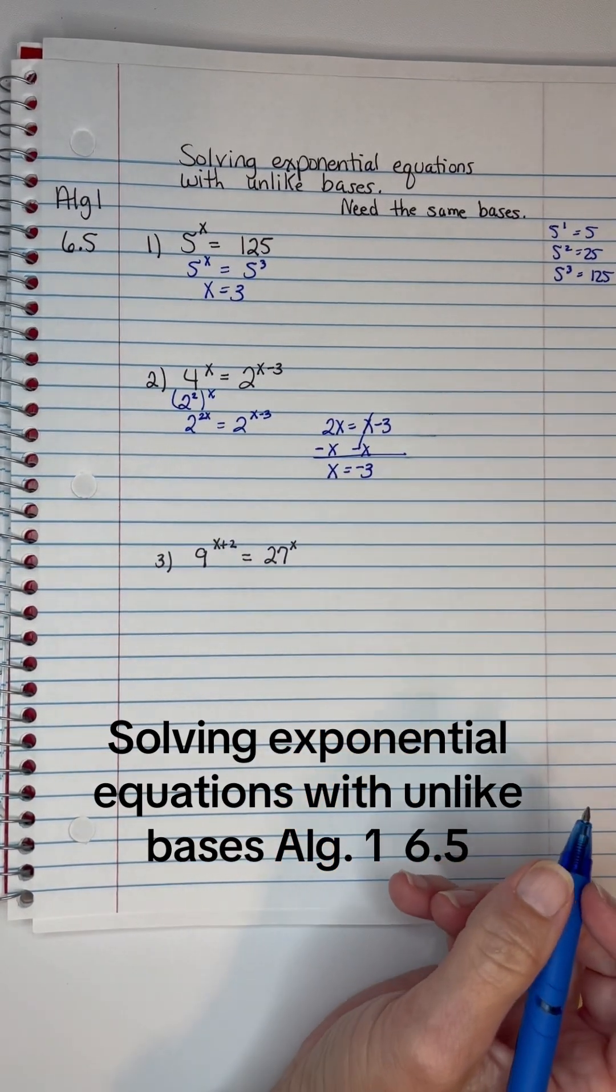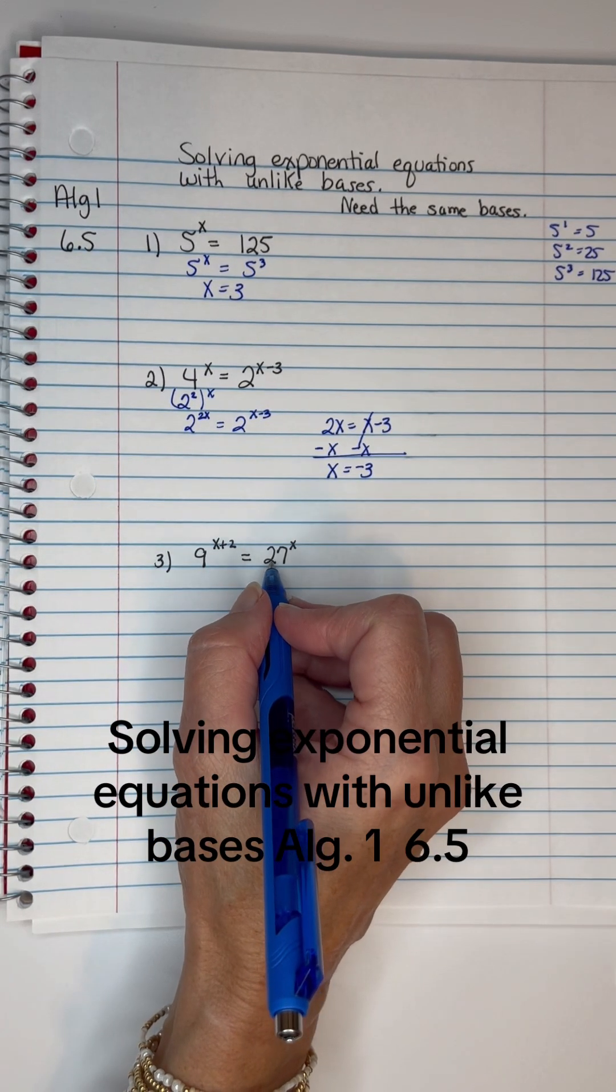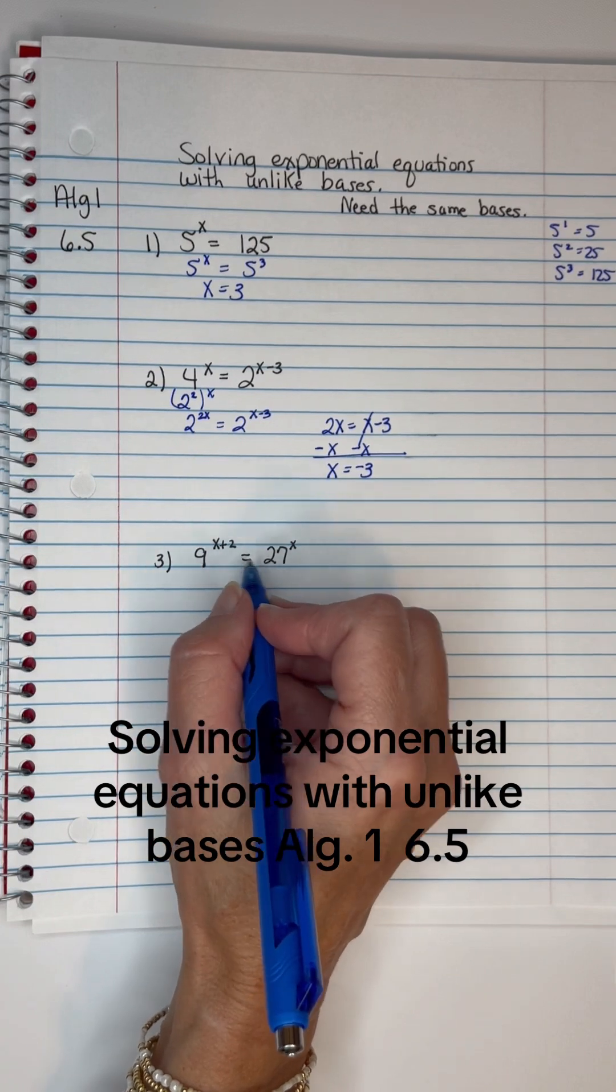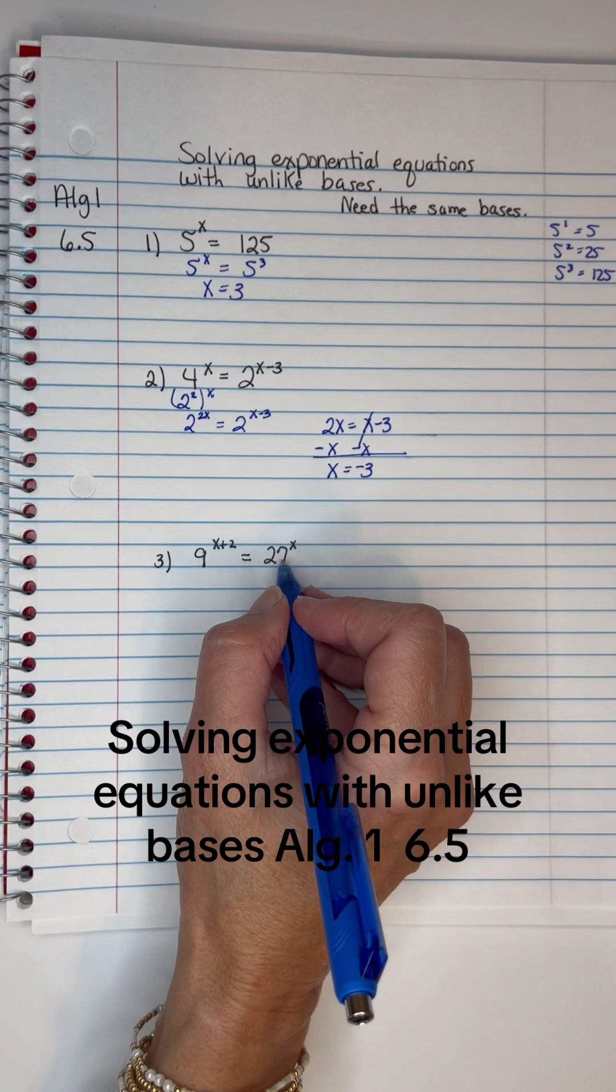So there's the second one. And now these, there is no 9 – 9 to the first power is 9, 9 to the second power is 81. I can't make them 9s, but I want you to think about 3s. I can turn these into 3s.